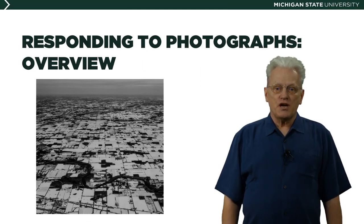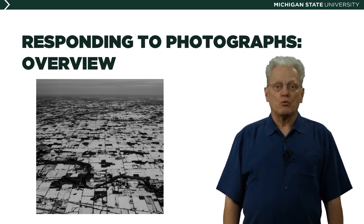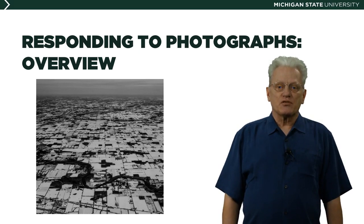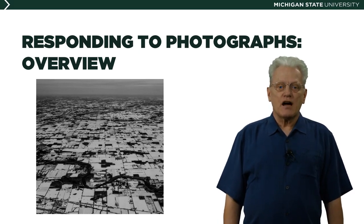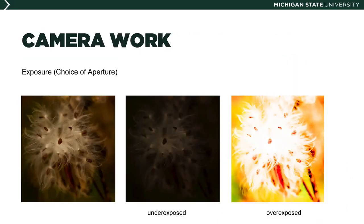In the first phase, we can look at what you could call camera work — what aspects of the photograph relate to how the photograph was taken. Exposure: this image shows the desired level of exposure on the left, and to the right you see two other kinds of exposure. The one in the middle is highly underexposed and the one on the right is overexposed.